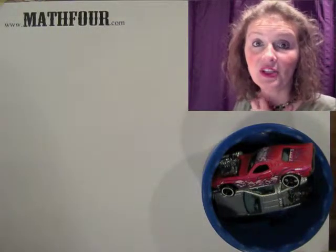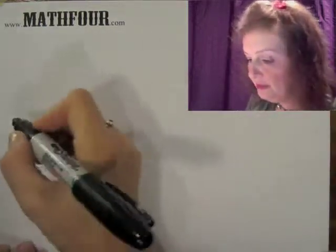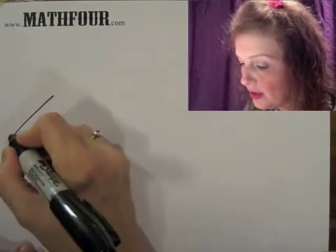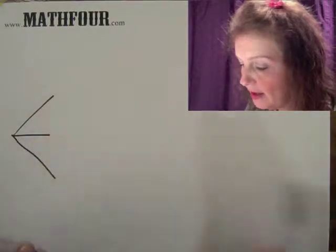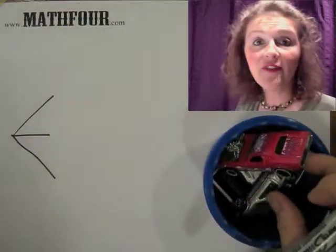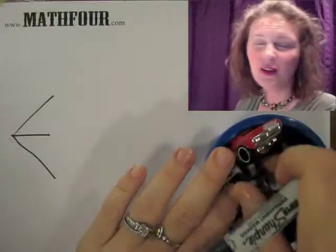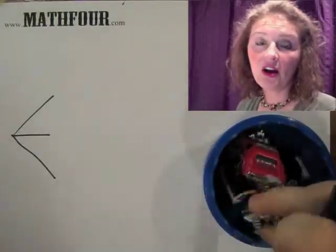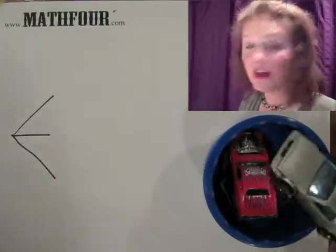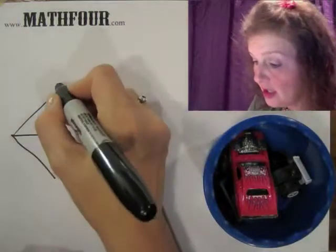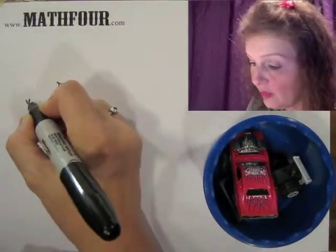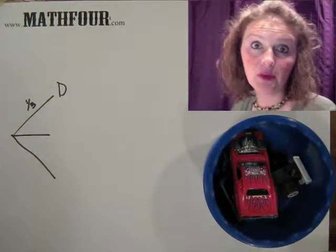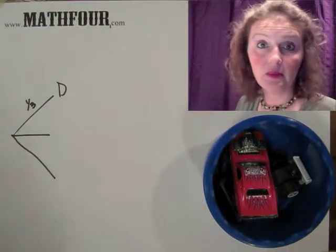So here's what's going to happen when I first draw a car. I close my eyes and I pick out a car, and I have a one in three chance of it being a DeLorean. So here's my DeLorean. And I have a one out of three, 33% roughly, chance of it being a DeLorean.